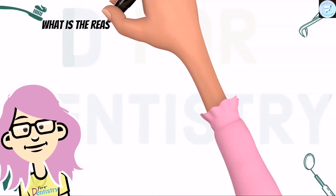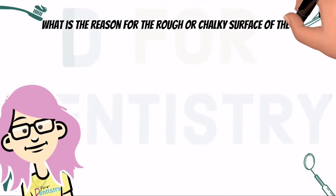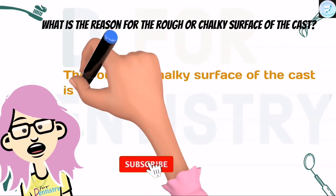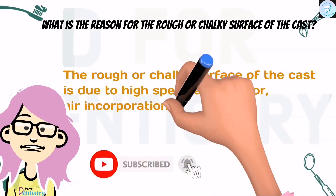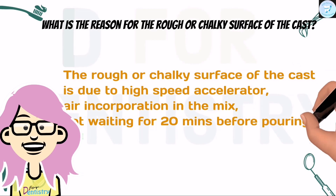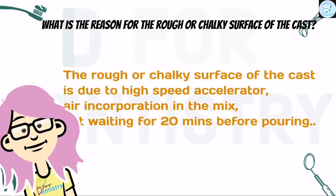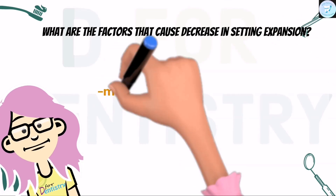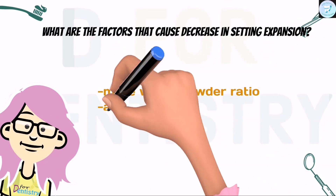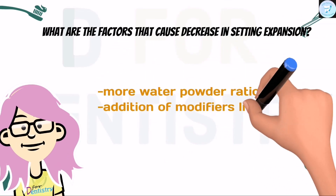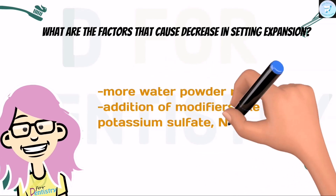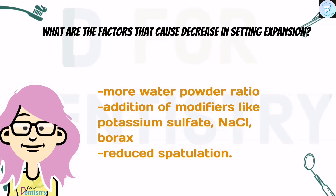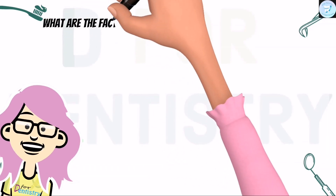What is the reason for the rough or chalky surface of the cast? The rough or chalky surface of the cast is due to a high water-powder ratio, air incorporation in the mix, or not waiting 20 minutes before pouring. What are the factors that cause a decrease in setting expansion? Answer: more water-powder ratio, addition of modifiers like potassium sulfate, NaCl, borax, or reduced spatulation.